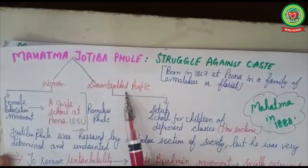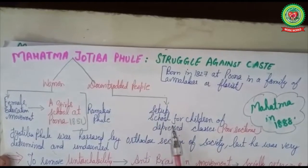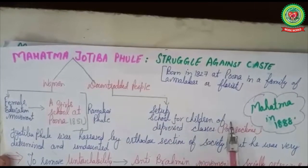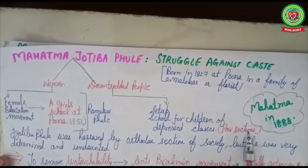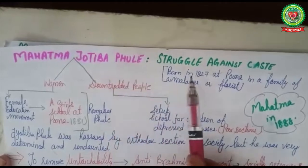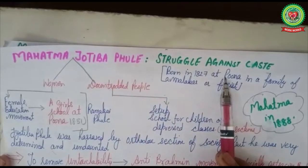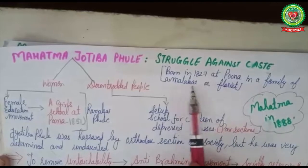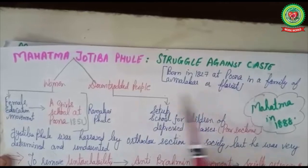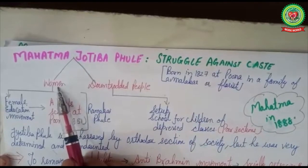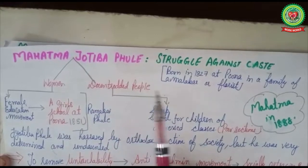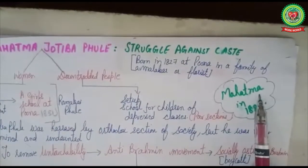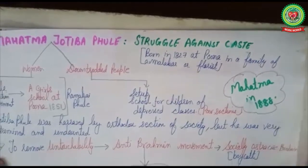For the downtrodden people, he set up schools for children of the depressed class, the poor section of society. This great man was born in 1827 at Pune in a family of malakar, or a florist. He did great work for women's empowerment and the poor section of society, so he was given the title of Mahatma in 1888.